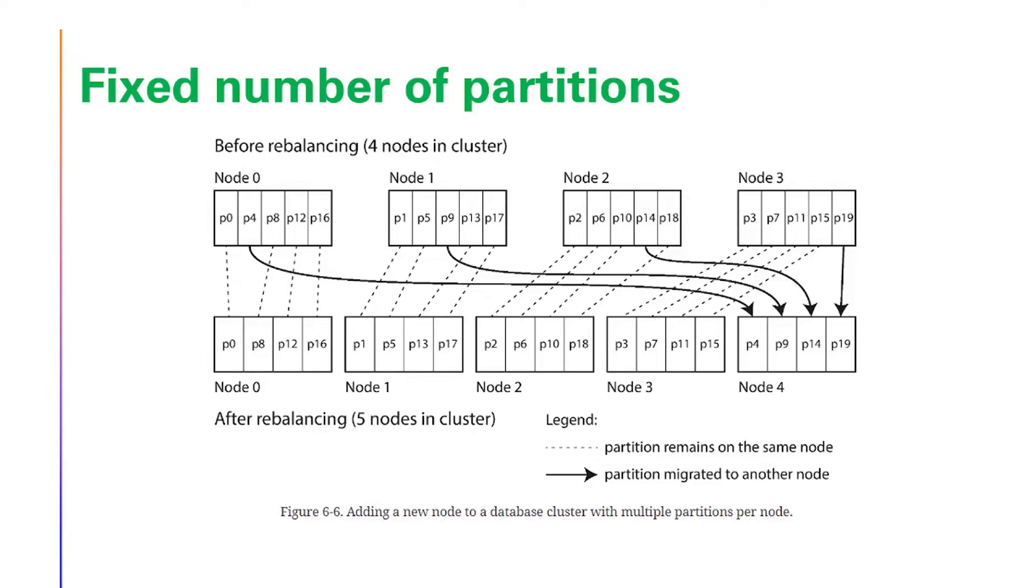Fixed number of partitions. Here, before rebalancing, we have 4 nodes in the cluster. Now we have 19 partitions. After rebalancing, we have also 19 partitions. But now there are 5 nodes. So what is happening for node 0 if you focus on it? P0, P8, P12, and P16 are in node 0, while P4 moves to the new node that is node 4.